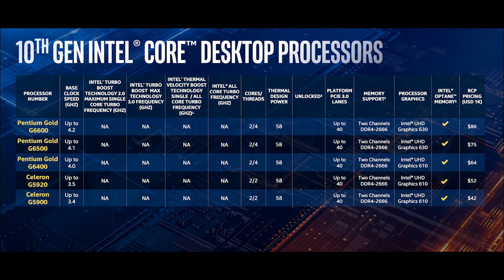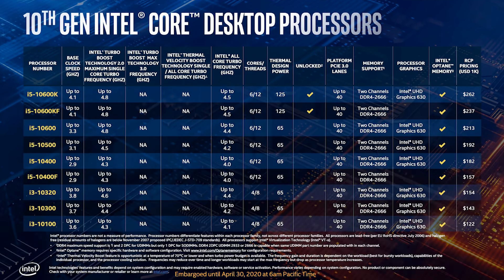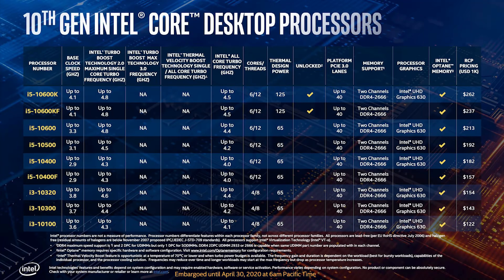The 10th Gen Comet Lake processor lineup starts with Pentium processors as the base models - Pentium G6400, G6500, and G6600. Then we have i3 models, followed by i5 models across multiple variants.